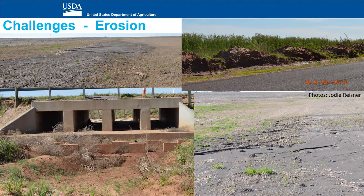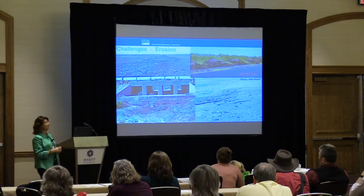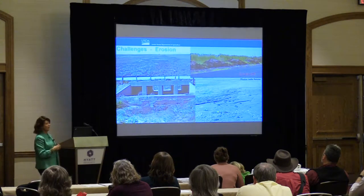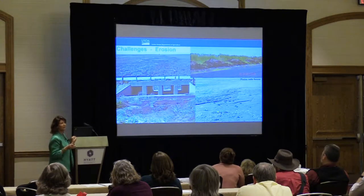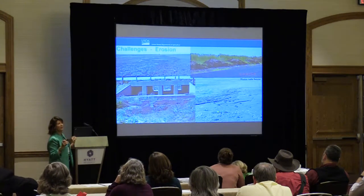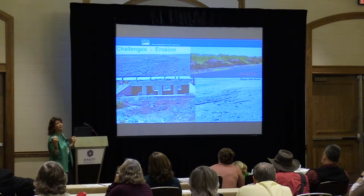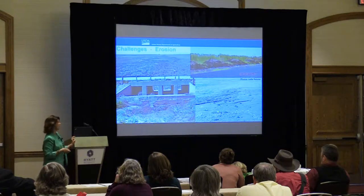Now transitioning to challenges in this area — the number one challenge is erosion. After working throughout the central region of our country, I see this over and over, whether in the north, the central part, or now in Texas. Here you have wind erosion, which starts piling up and they have to come and scrape it off the roads. In the central part of the country it was mostly water erosion, where sheet and rill erosion would take soil off the fields into the ditch. Either way, erosion is still an issue in most of our country.